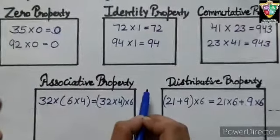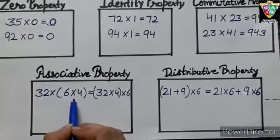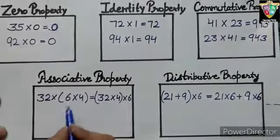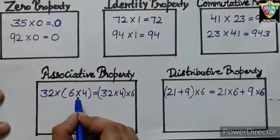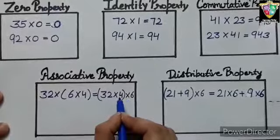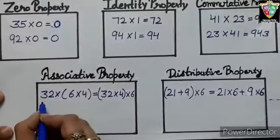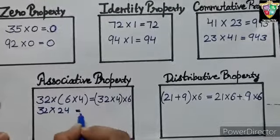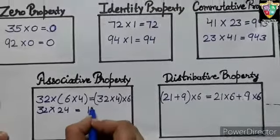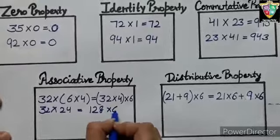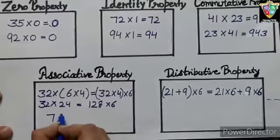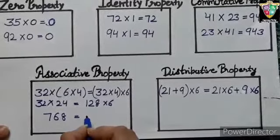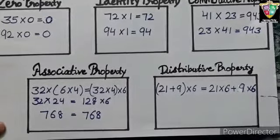Now fourth property, associative property of multiplication. When 3 or more numbers are multiplied, the product is the same regardless of how the numbers are grouped. Here, 32 multiplied by 6 multiplied by 4 equals 32 multiplied by 4 multiplied by 6. 32 multiplied by 6 into 4 is 24, equals 32 into 4 is 128 multiplied by 6. 32 into 24 is 768. Here also, 128 into 6 is 768. So the product on both sides are equal.